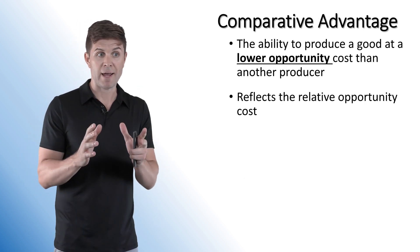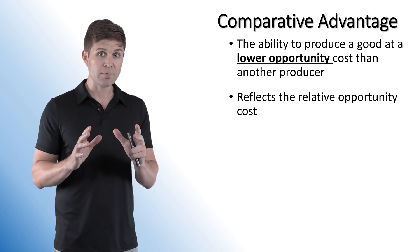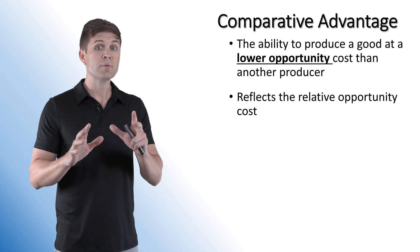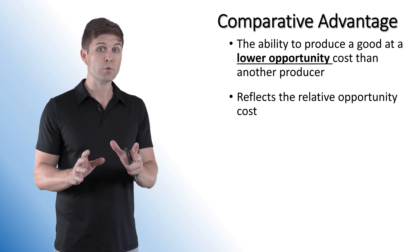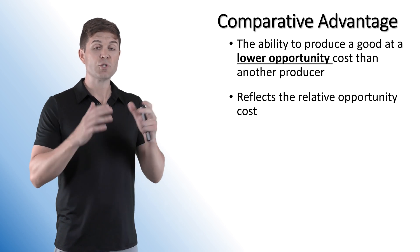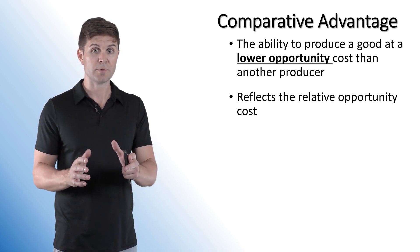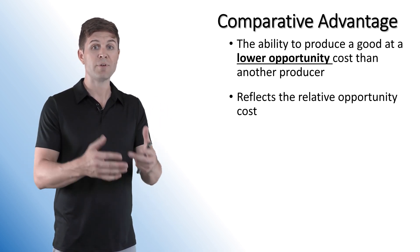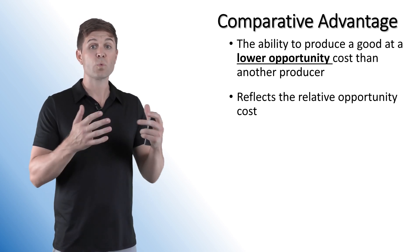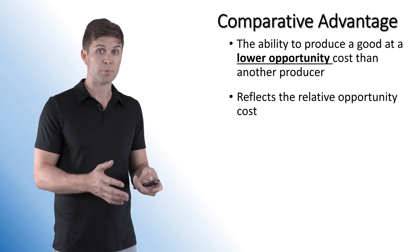With comparative advantage, this is a little different. Simply because you have the absolute advantage in something doesn't mean you should be producing it. Comparative advantage means that you have the lower opportunity cost in producing something — you sacrifice less to produce it. It reflects the relative opportunity cost of production.